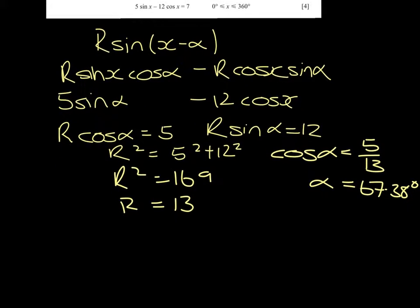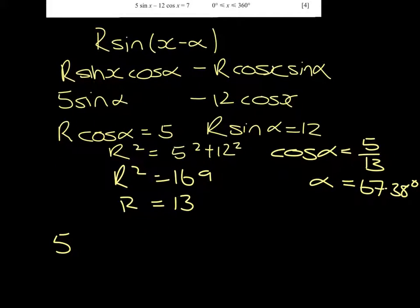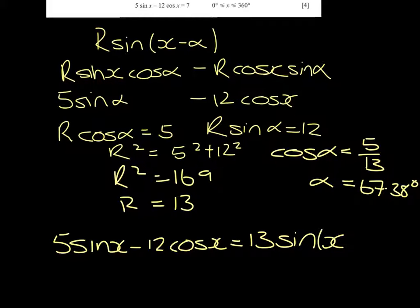So to three significant figures, 5 sin x minus 12 cos x equals 13 sin(x - 67.4°).